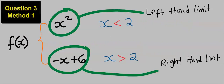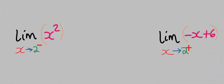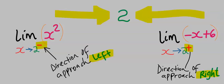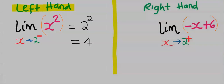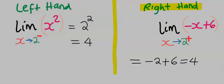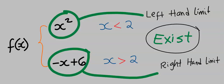Consider this question. We can split the left-hand limit and the right-hand limit, showing the direction of approach towards 2. The negative here indicates the direction of approach from the left towards 2, while the positive indicates the direction of approach from the right towards 2, when seen on the number line. From the left-hand side, substituting 2 into the limit gives 4. Likewise, from the right-hand side, substituting 2 also gives 4. The left-hand limit and right-hand limit are equal, so we say this limit exists.